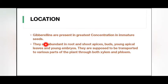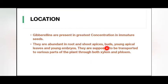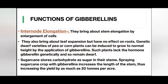Gibberellins are present in the greatest concentration in immature seeds. They are abundant in root and shoot apices, buds, young apical leaves, and young embryos. They are transported to various parts of the plant through both xylem and phloem.